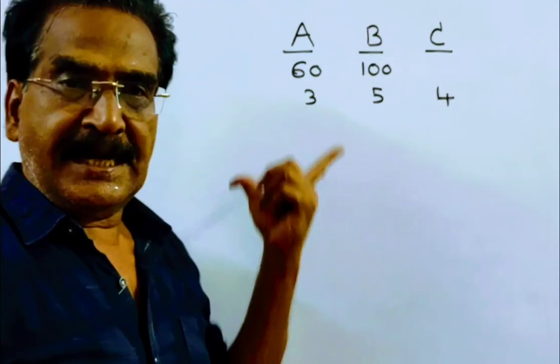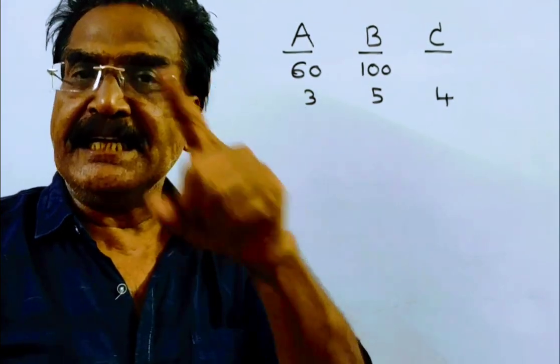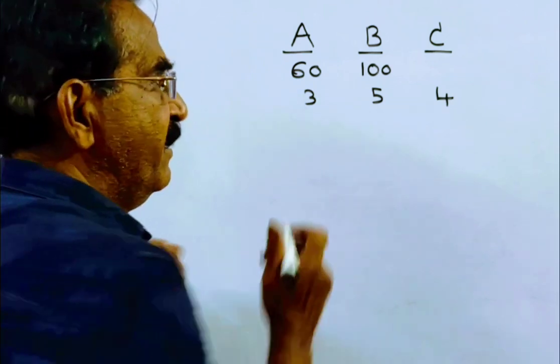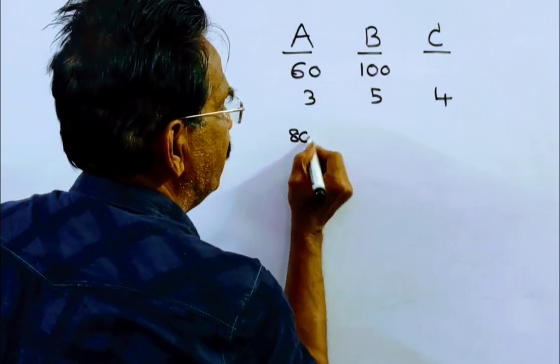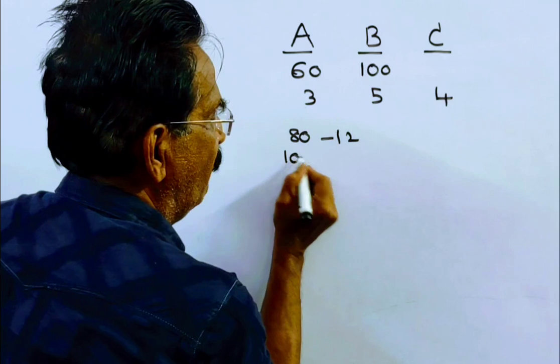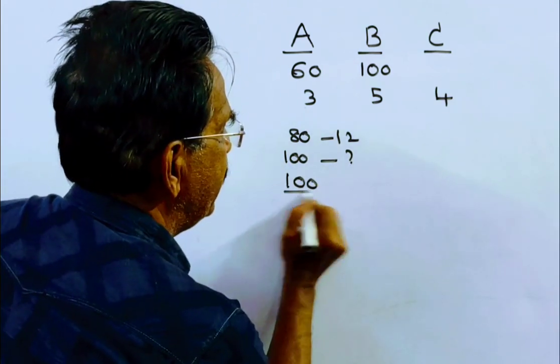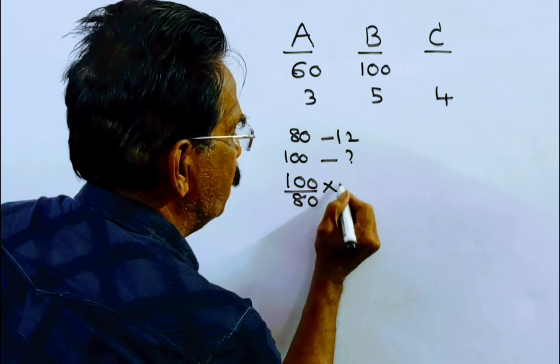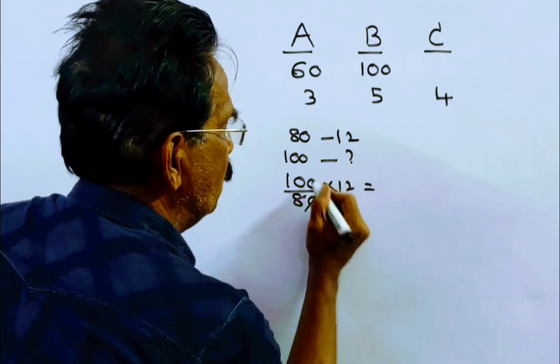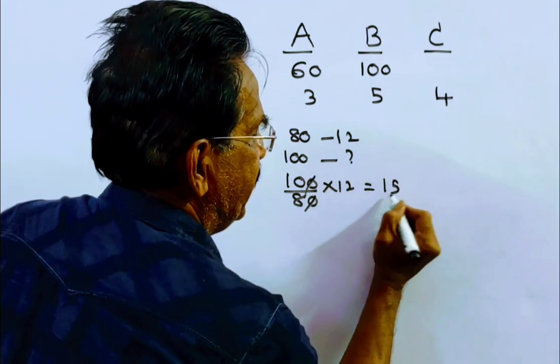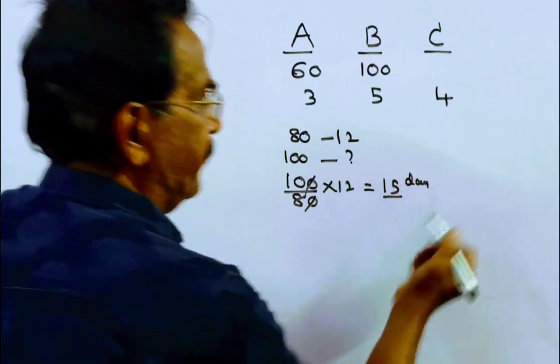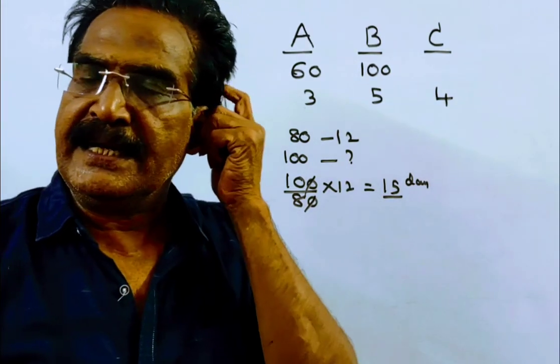After this, A and B together can do 80% of the work in 12 days. Friends, 80% of the work in 12 days. That implies full work, 100% work can be done in 100 by 80 into 12. That is equal to 120 by 8, 15 days. Friends, A and B can do full work in 15 days.